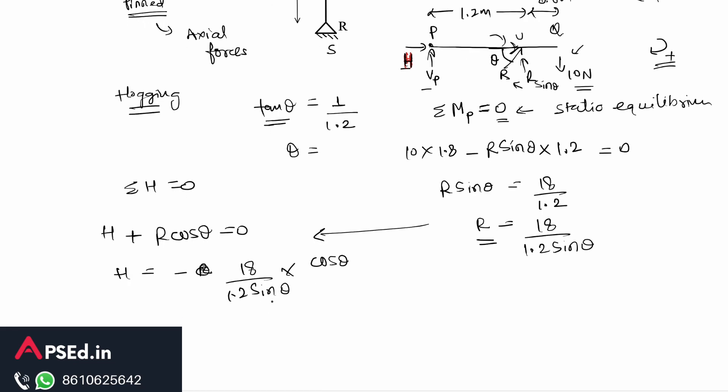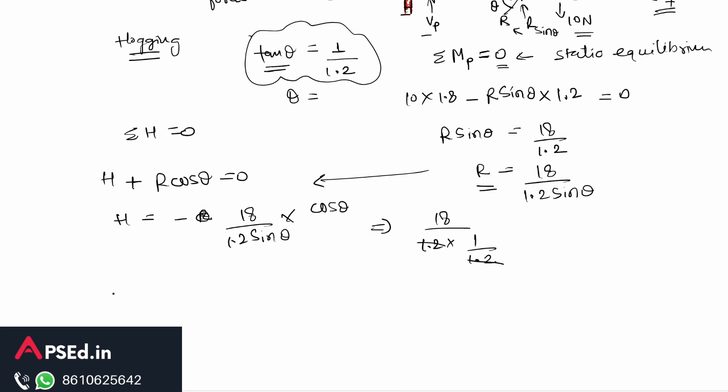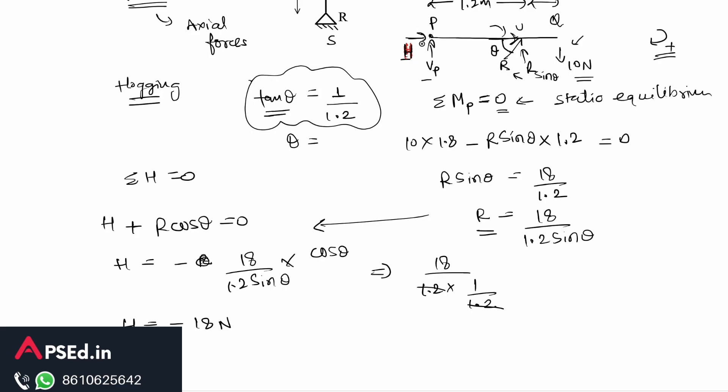Now sin theta upon cos theta, we know we have this value of tan theta from here, so we can write it as 18 by 1.2 times tan theta. Tan theta's value is 1 upon 1.2, so from here this 1.2 cancels out and we have the value of H which is the horizontal force as 18 Newton. Now what about this negative sign here? The negative sign indicates that this direction that I have taken here for H is incorrect. The actual direction will be opposite of that.